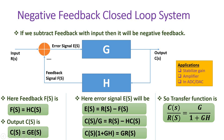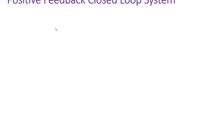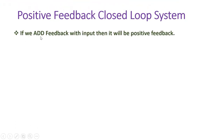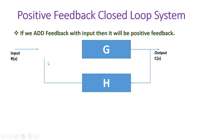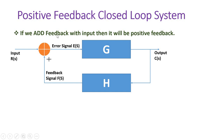Now let us see positive feedback. In positive feedback we add the feedback signal to the input signal, so the feedback signal is in phase with the input signal. In this closed loop control system, placing a positive sign at the summing junction means we are adding the feedback signal F(S) to the input signal, generating the error signal — this is positive feedback.